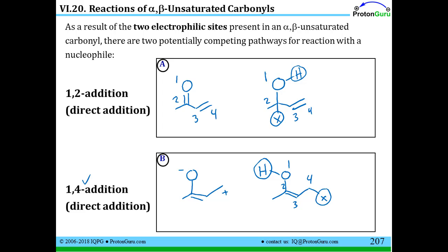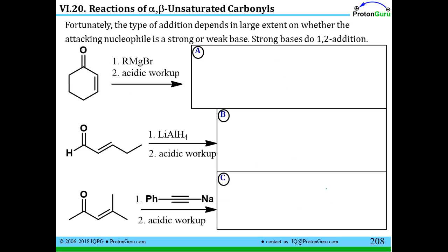How do we tell which of these two cases will happen? It really comes down to your nucleophile. If your nucleophile is a very unstable anion, it's going to be a strong base. A strong base is unstable, and if you have an unstable anion as your nucleophile — a strong base, stronger than hydroxide — then we're going to do the 1,2 addition. Strong base → 1,2 addition.